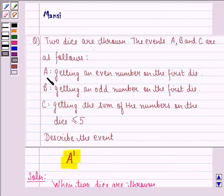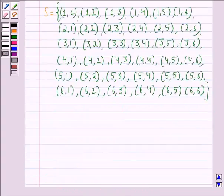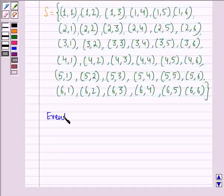Now, event A was getting an even number on the first die. So, the sample space for event A will be all those sample points where the first one is an even number because we are getting an even number on the first die.